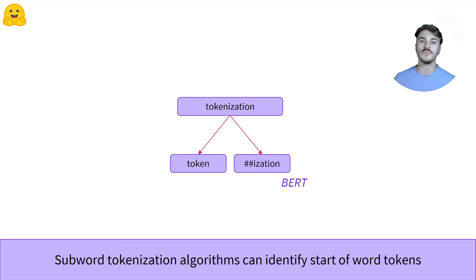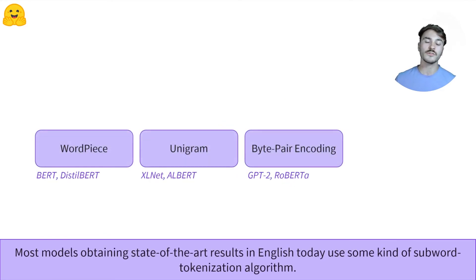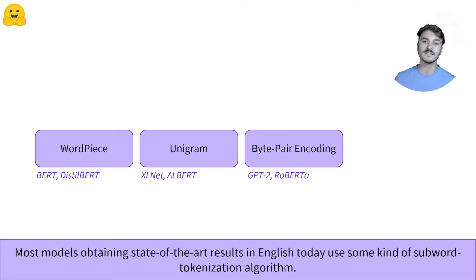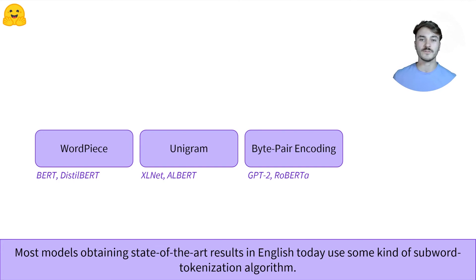Other tokenizers use other prefixes, which can be placed to indicate part of words or start of words instead. There are a lot of different algorithms that can be used for subword tokenization, and most models obtaining state-of-the-art results in English today use some kind of subword tokenization algorithm. These approaches help in reducing vocabulary sizes by sharing information across different words, having the ability to have prefixes and suffixes understood as such, and keeping meaning across very similar words by recognizing the similar tokens making them up.